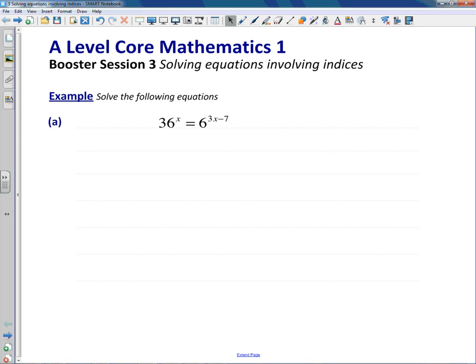We will just need the following index law to help us: (a^m)^n = a^(mn).